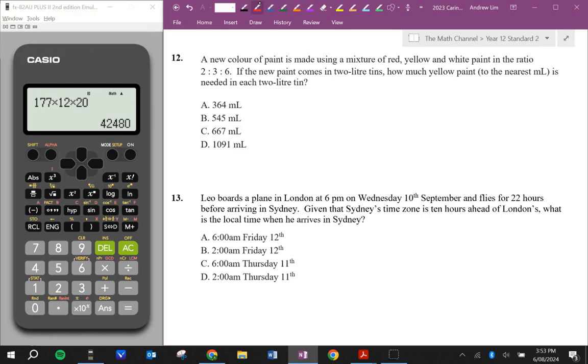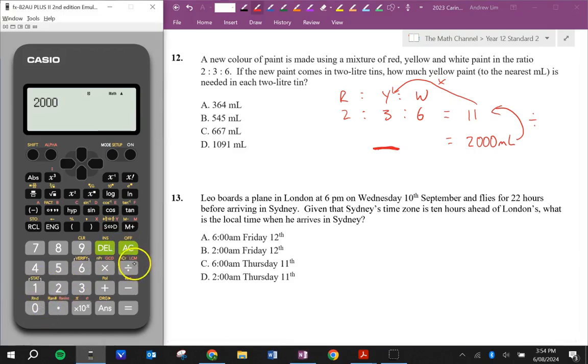A new colour paint is made using a mixture of red, yellow, and white in a ratio 2 to 3 to 6. If the new paint comes in 2 litre tins, how much yellow paint to the nearest milliliter is needed in each 2 litre tin? So we can see here that this is a total of 11 parts, which is technically 2 litres or 2,000 millilitres. So we just want to work out this number here for yellow. So I need to take my 2,000, I need to divide it by 11, and then I need to times it by just the 3. 2,000 divided by 11 times 3, 545 to the nearest milliliter.